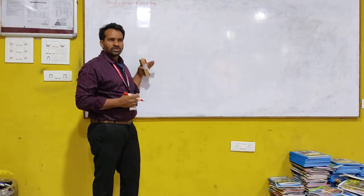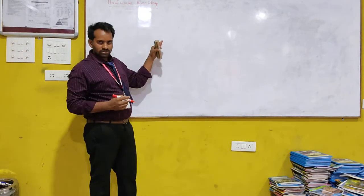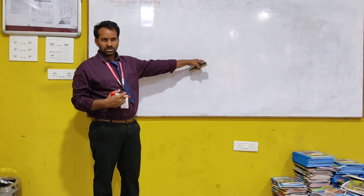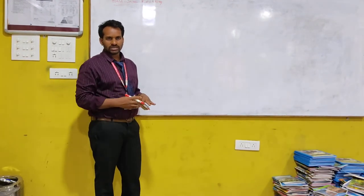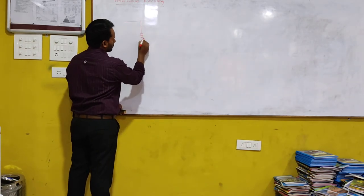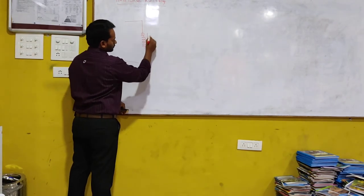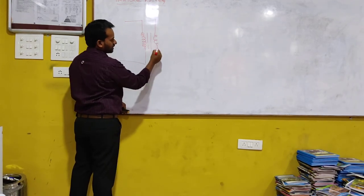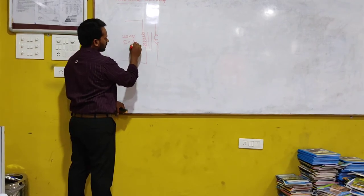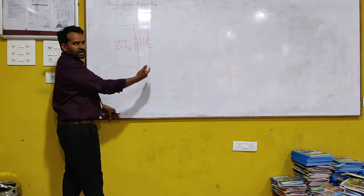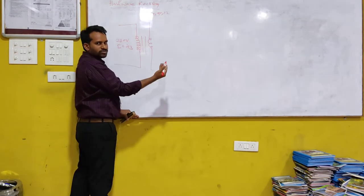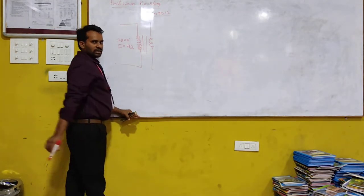Why am I using a step-down transformer? In order to convert AC into DC, we require very low DC voltage — not a large DC voltage. So before converting, I reduce it using the transformer. I am using a step-down transformer. Here is the primary winding and the secondary winding. I am giving a 230-volt, 50 Hz signal at the primary. Based on the type of transformer, this 230 volts will be converted into 6 volts, 9 volts, or 12 volts at the output of the transformer.